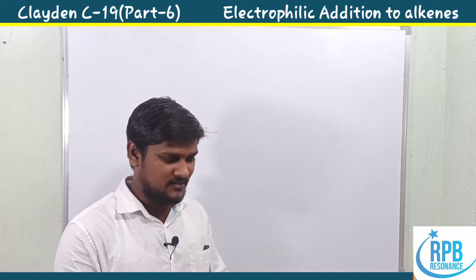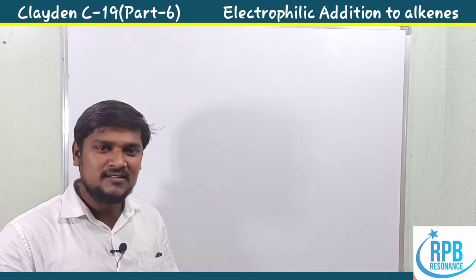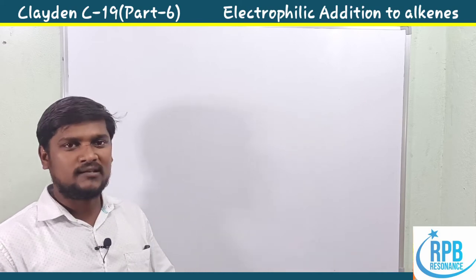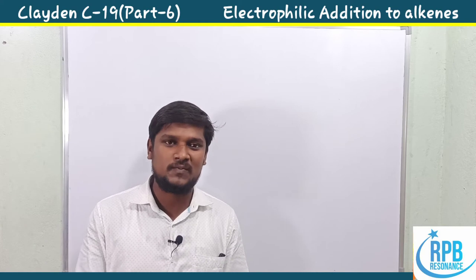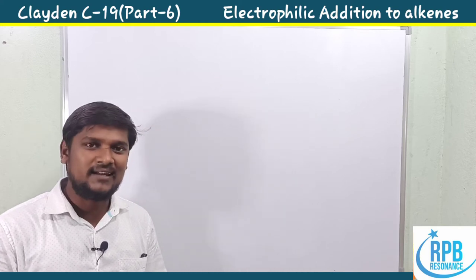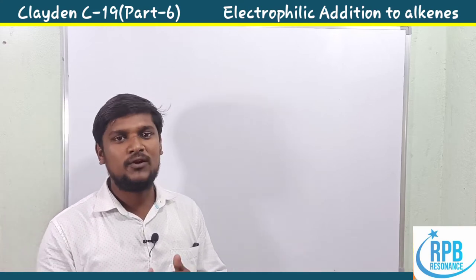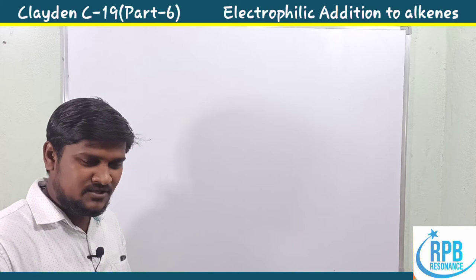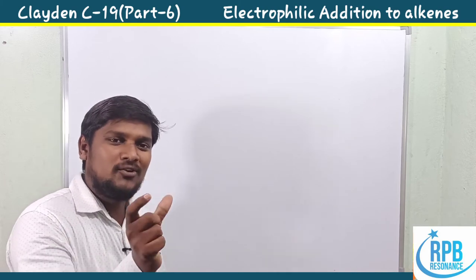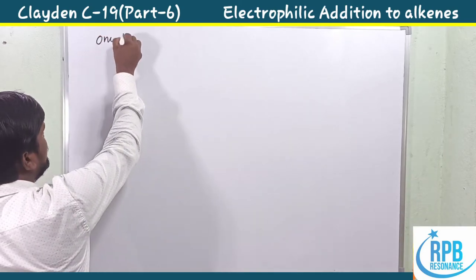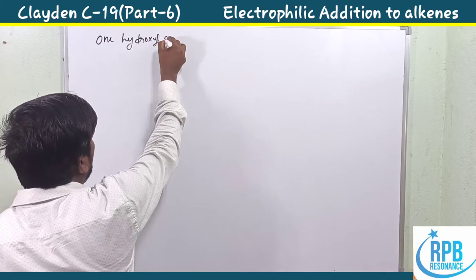Welcome to RPV Resonance Chemistry. Let's continue our lectures on Clayden, chapter 19 final part. In previous sessions we discussed halogen attack, stereochemistry of halogenation reactions, dihydroxylation, and cleavage of 1,2-diol groups. In this session we discuss how to add one hydroxyl group to an alkene. Today's topic is one hydroxyl group addition.